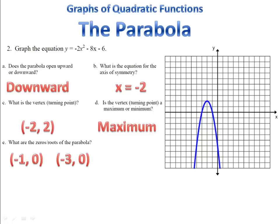Here's our completed graph and we know that the parabola this time opens downward. Its opening is heading toward the ground. The axis of symmetry is x = -2 and our vertex is at the point (-2, 2). The vertex is a maximum and we have our roots or zeros at (-1, 0) and (-3, 0).